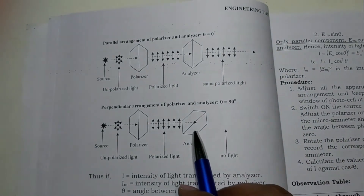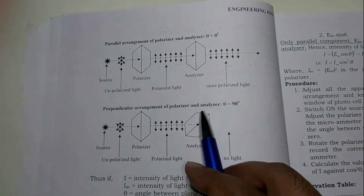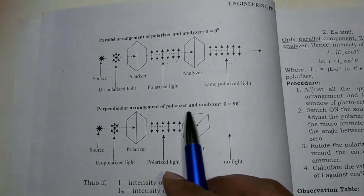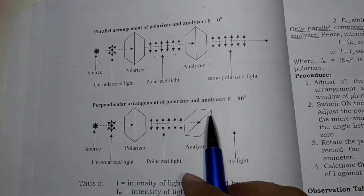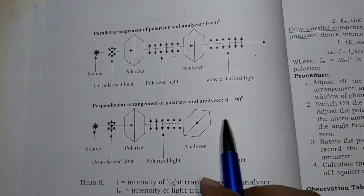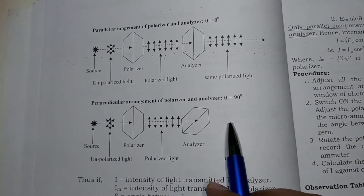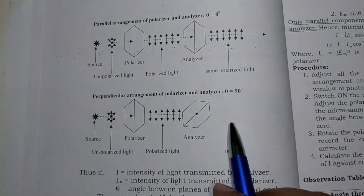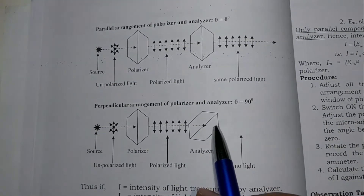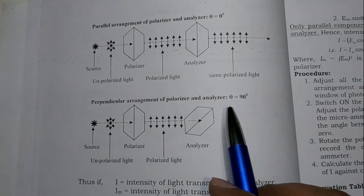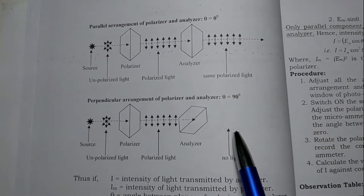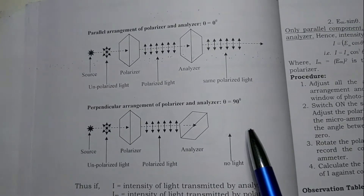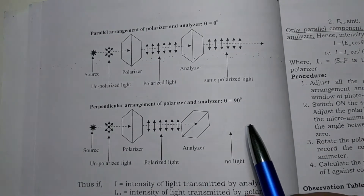But what will happen if we rotate the analyzer through 90 degrees? If theta equals 90 degrees, you will find that the intensity of the light coming out of the analyzer will be minimum or zero. These are the two situations, but what will happen if the angle is between 0 and 90 degrees? What will be the intensity of the light coming out of the analyzer? In that case we have to use Malus Law.